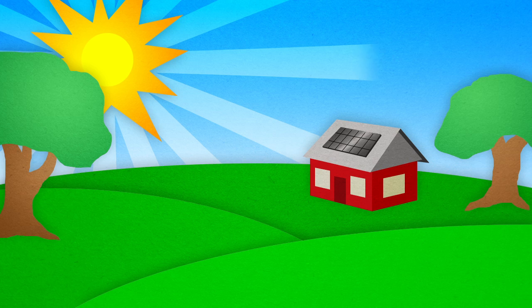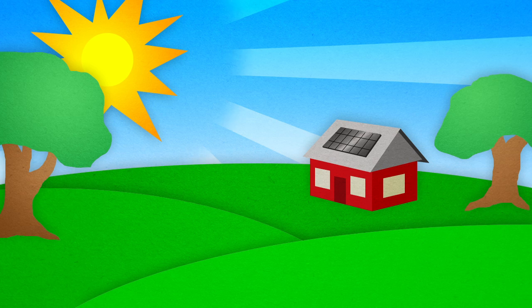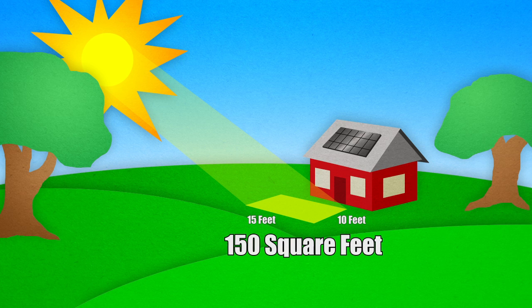First, sunlight is hitting the earth all the time and it carries a lot of energy. An area covered by the average sized car receives more than enough sunlight energy to power a house for an entire day.